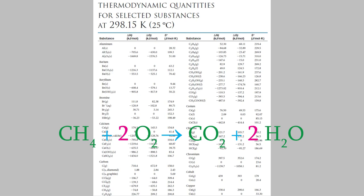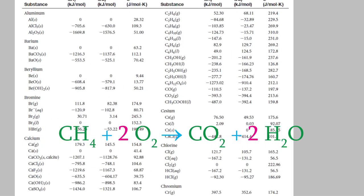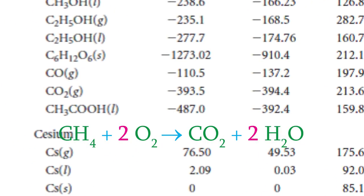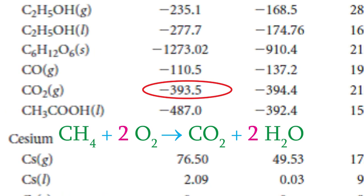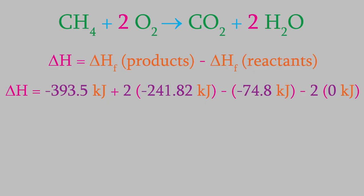In Appendix C, we can see that our first product, CO2, has an enthalpy of formation of negative 393.5 kilojoules. If we do this for all the products and reactants, here's what we get. Don't forget to multiply the enthalpies by the coefficients for the balanced reaction.